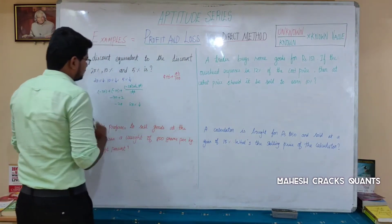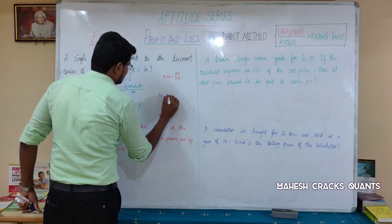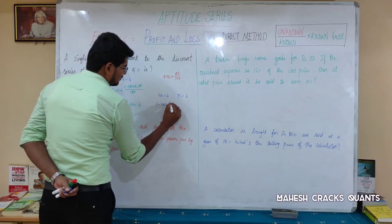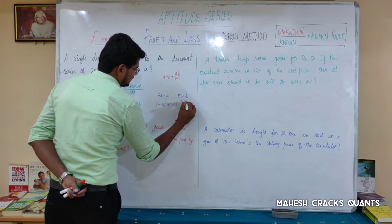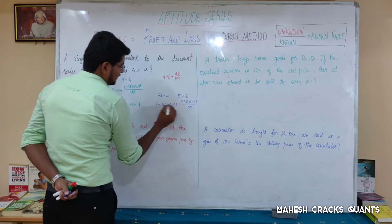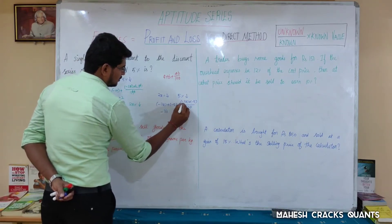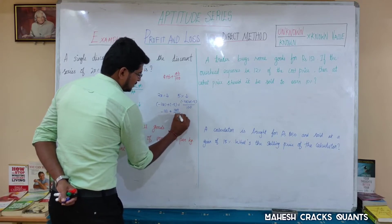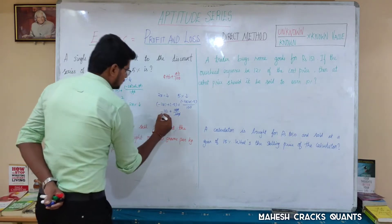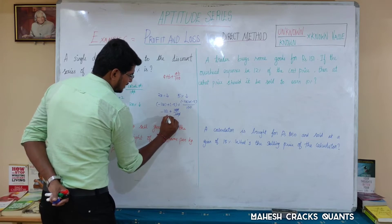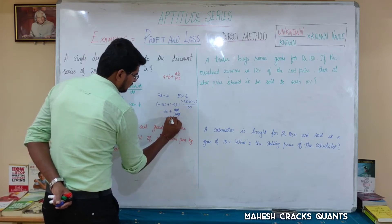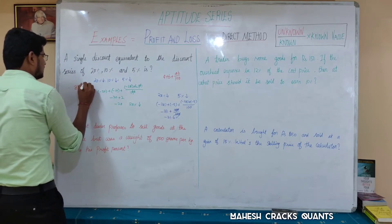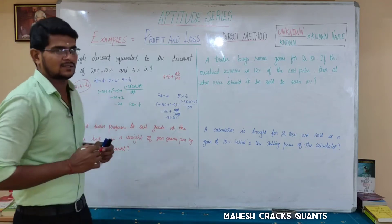Now we add the third value: 5%. Using the successive formula again with A = minus 28 and B = minus 5: minus 28 plus minus 5 plus (minus 28 × minus 5) divided by 100 equals minus 33 plus 1.4, which is minus 31.6. So the answer is a single discount of 31.6%.